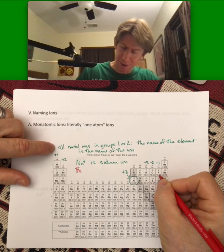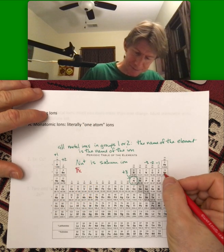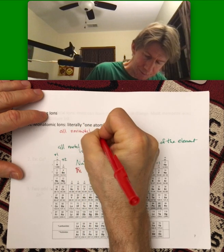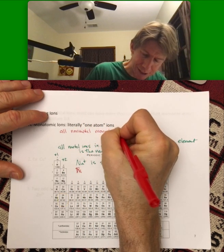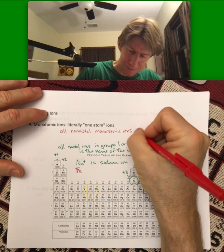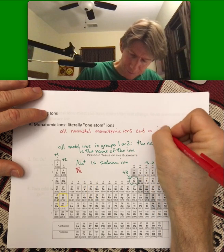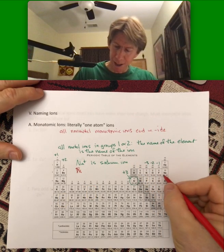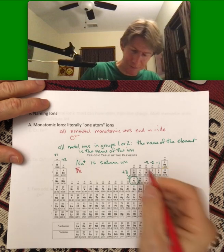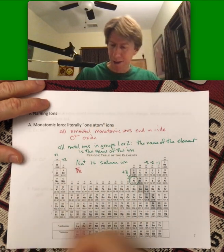So all non-metal monatomic ions end in -ide. So oxygen becomes oxide, and it's O²⁻.